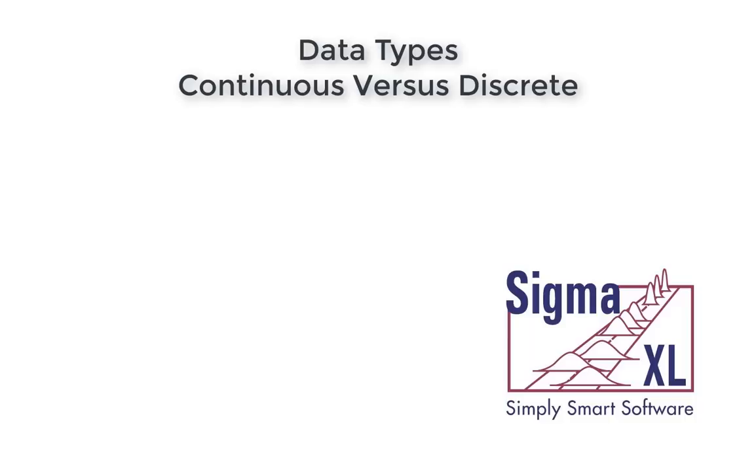A discrete measure is categorical in nature. If we have customer types 1, 2, and 3, customer type 1.5 has no meaning. Other examples of discrete measures include defect counts and number of customer complaints. It is possible to have various combinations of discrete continuous X's and discrete continuous Y's.